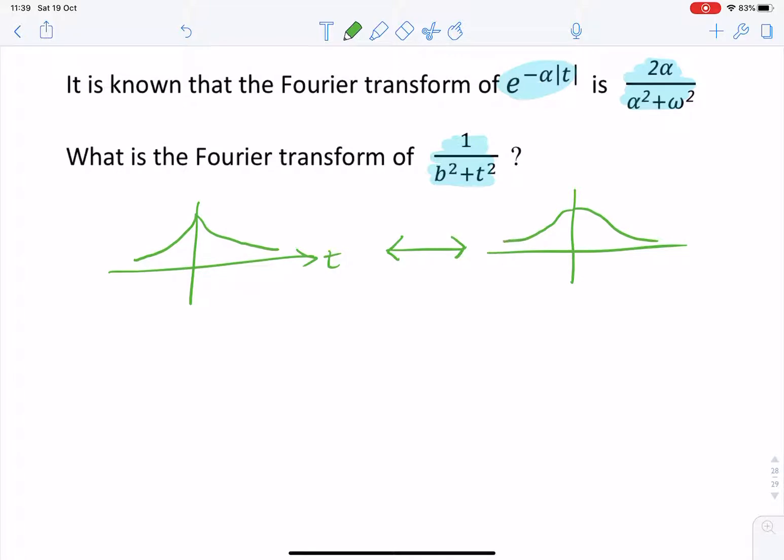2α over α² plus ω², would look something like this, where this axis is frequency. And when ω equals 0, we'd have 2α over α², so a maximum value of 2 over α. And here the maximum value would be 1.